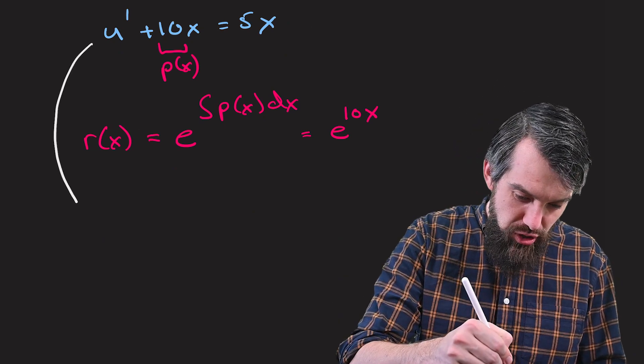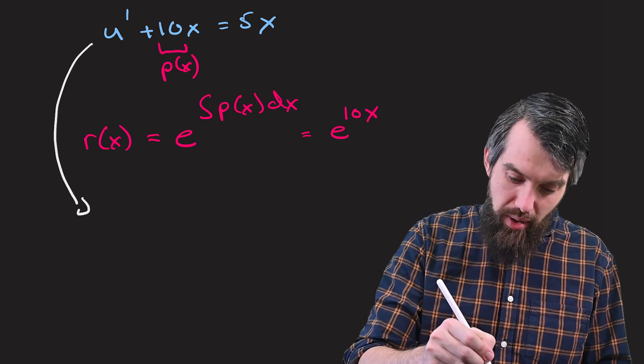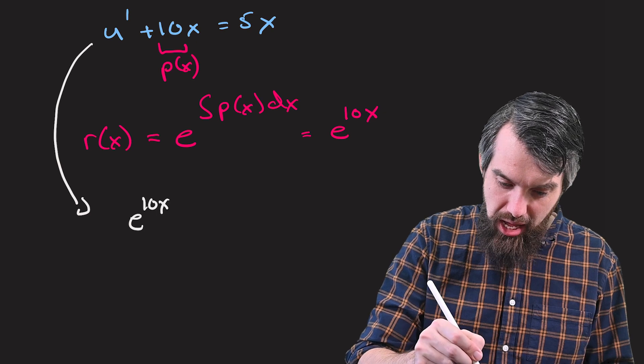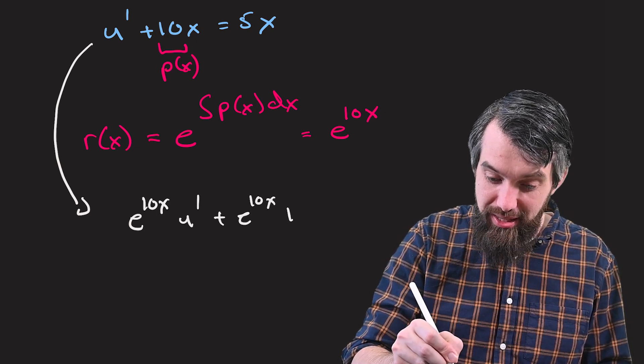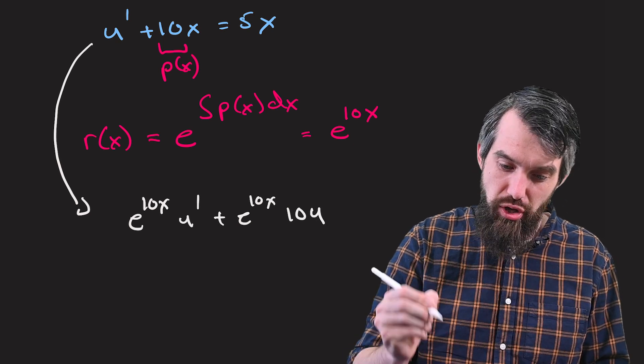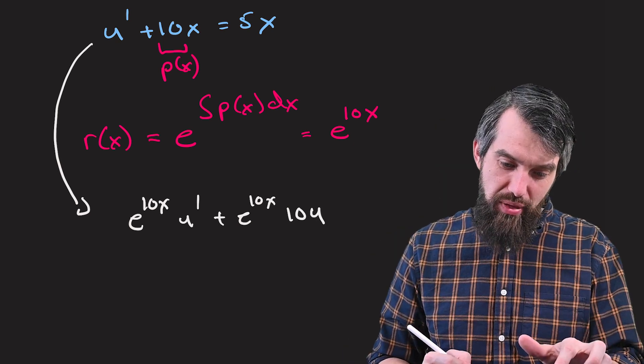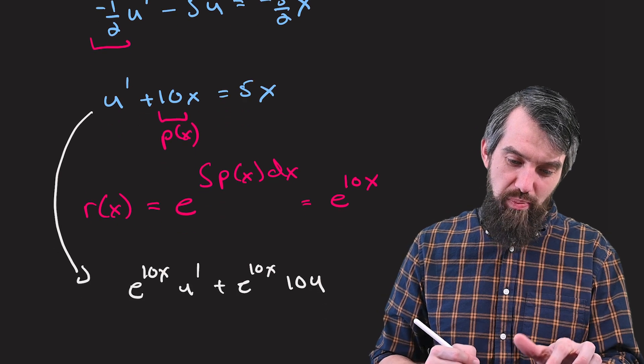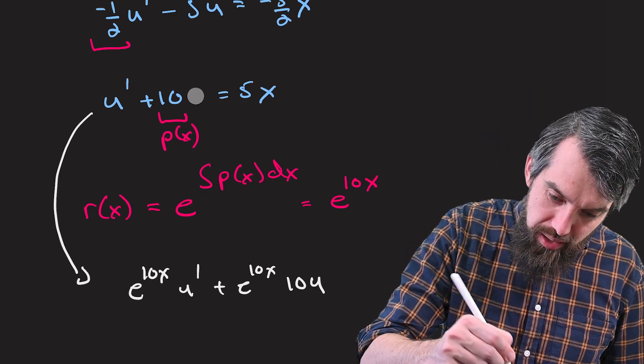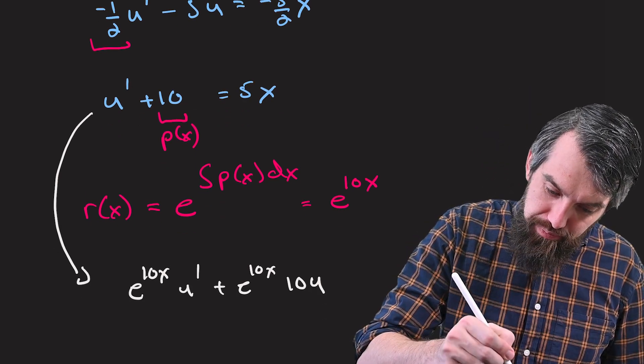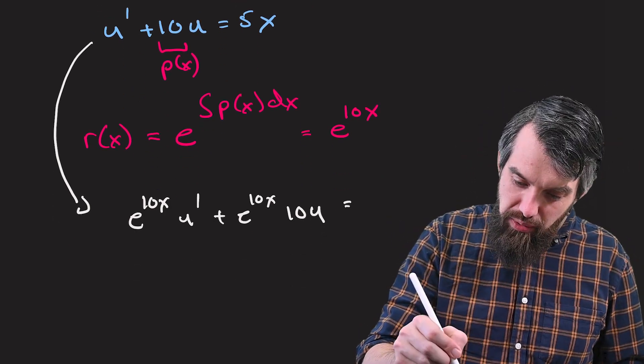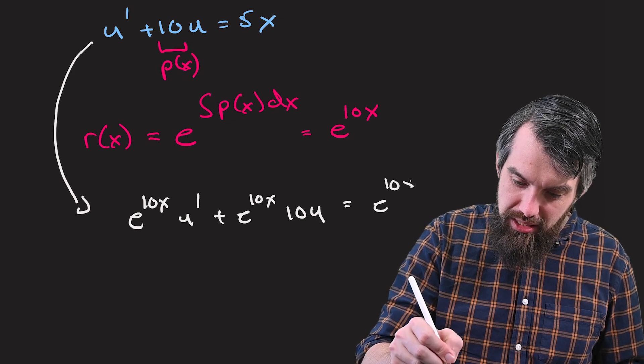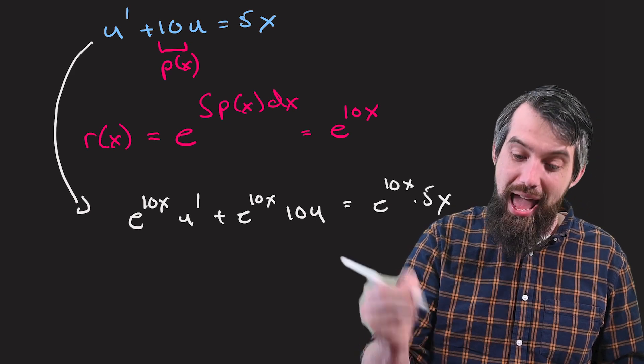So then what does an integrating factor do? It multiplies all the terms. And so I have an e to the 10x times u prime. And e to the 10x times 10 times u. I see now that I had made a slight typo. I wrote plus 10x earlier. I meant plus 10 times u, so I've corrected it down below. All right, let's carry on.